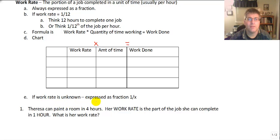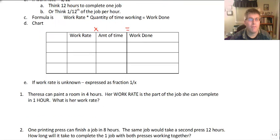And this is important. If the work rate is unknown, if we don't know how efficiently somebody works, we are going to express that as the fraction 1 divided by x. We don't know how many hours it takes them to complete one job, or we don't know what fraction of a job they get done in an hour. So let's start off with the first question.